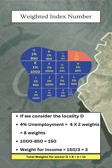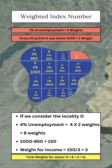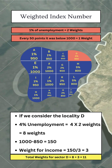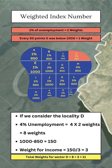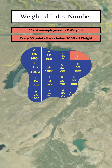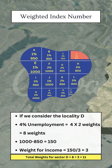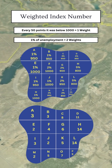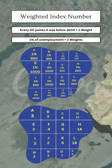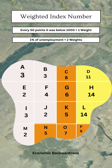Let's consider Locality D. 4% unemployment equals 4 multiplied by 2 weights, equals 8 weights. Per capita income: 1,000 minus 850 equals 150. Weight for income: 150 divided by 50 equals 3 weights. Total weights for Locality D equals 8 plus 3 equals 11 weights. We calculate weights for each locality, and areas with similar weights are identified as economically backward, marked with different colors on the map.